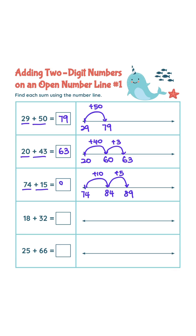Answer is 89. 18 plus 32. 18 plus 30 is 48. 48 plus 2 is 50. Answer is 50.